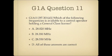Question 11. Which of the following frequencies is available to a control operator holding a general class license? A. 28.020 megahertz. B. 28.350 megahertz. C. 28.550 megahertz. Or D. All of these answers are correct.